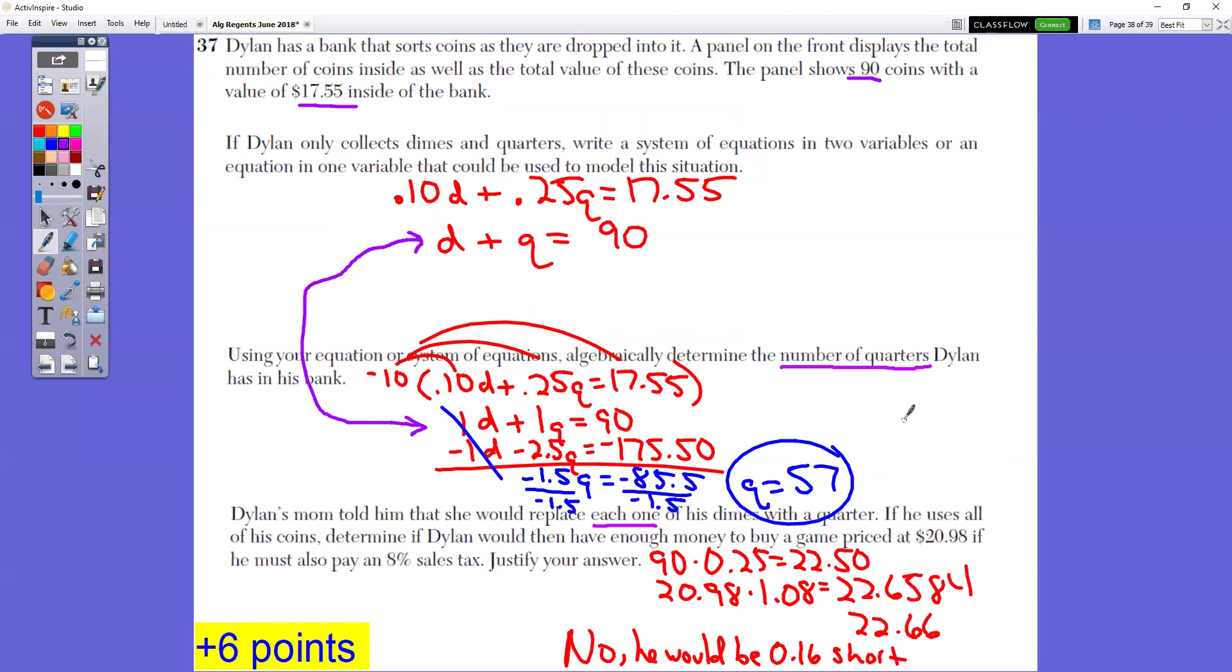In the third part, Dylan's mom told him that she would replace each one of his dimes with a quarter. So now all the dimes are gone, just has quarters. If he uses all his coins, would he have enough money to buy a game priced at $20.98? So 90 coins times the value of a quarter, which is 25 cents, gives you $22.50. Is that enough with a sales tax of 8%? Multiply the $20.98 times 1.08 to figure out what the cost is with tax. The cost of that would be $22.66. He has $22.50. So no, he would be 16 cents short.